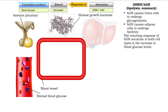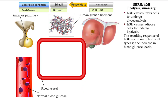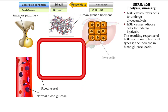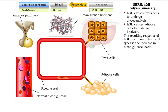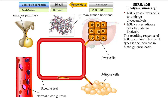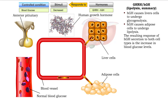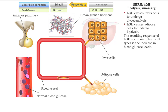In summary, HGH causes liver cells to undergo glycogenolysis, and HGH causes adipose cells to undergo lipolysis. The resulting response of HGH secretion to both cell types is the increase in blood glucose levels.